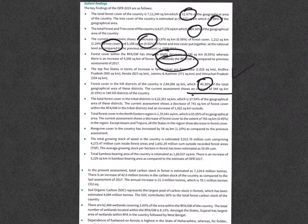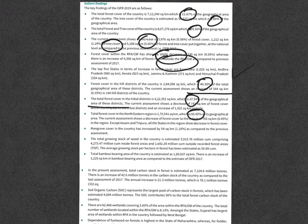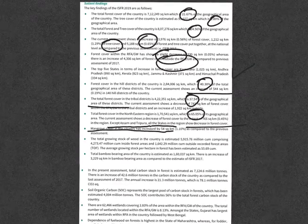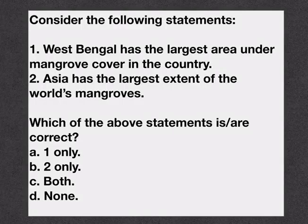Overall, there is an increase of 544 square kilometers in hill districts. Total forest cover in tribal districts is at 37.54% of the geographical area of those districts. Total forest cover in the northeastern region is 65.05% of its geographical area, and except for Assam and Tripura, all northeastern states have shown a decrease in forest cover. Mangrove cover in the country has increased by 54 square kilometers, that is 1.10%, and there is also an increase in bamboo area.